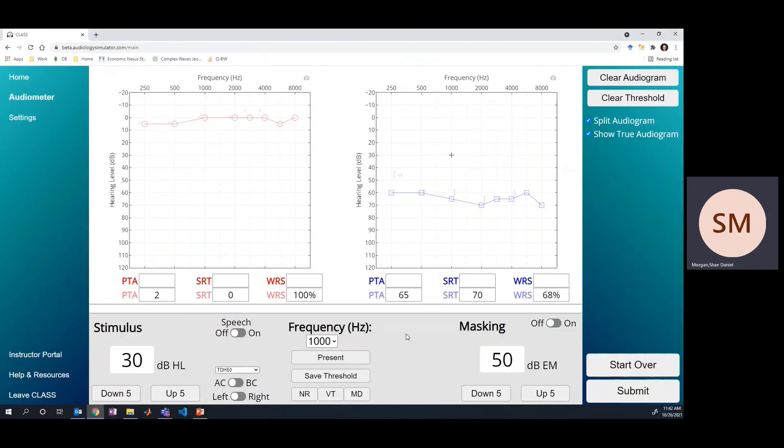In this simulated case, we have an asymmetrical hearing loss with hearing within normal limits in the right ear and a moderately severe flat hearing loss in the left ear.